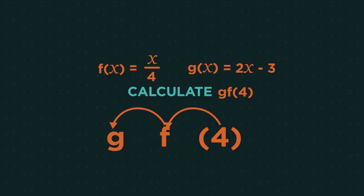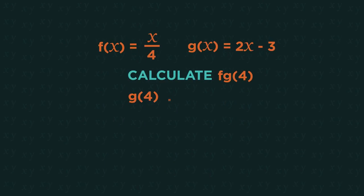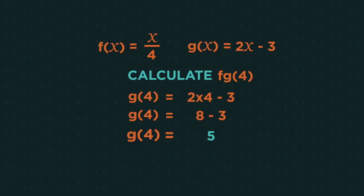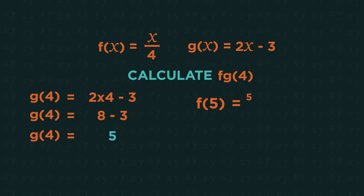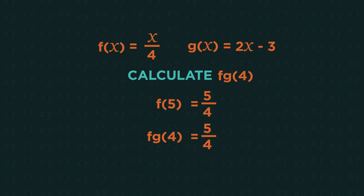So let's go back to that first question. So start with g of 4, which gives us 5, and then we put 5 into f. And that's our final answer.